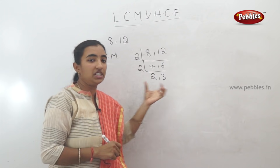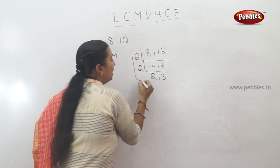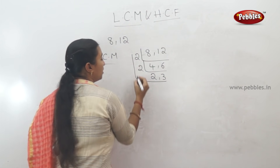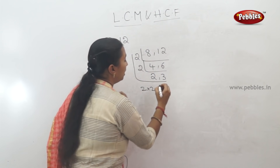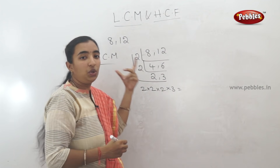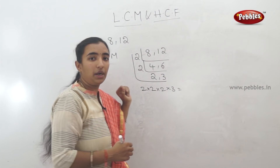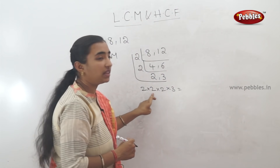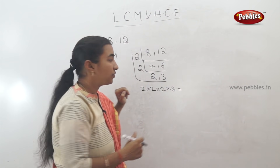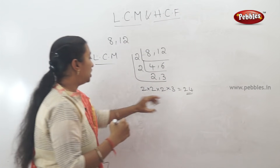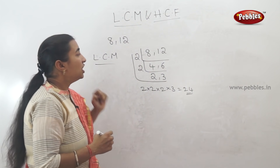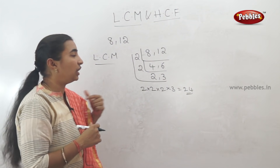If there are multiple common numbers here, like 2 and 3, we need to multiply them all. So: 2 into 2 into 3. This is the common method multiplication. 2 into 2 is 4; 4 into 2 is 8; 8 into 3 is 24. That means LCM of 8 and 12 is 24. The shortcut also gives 24.